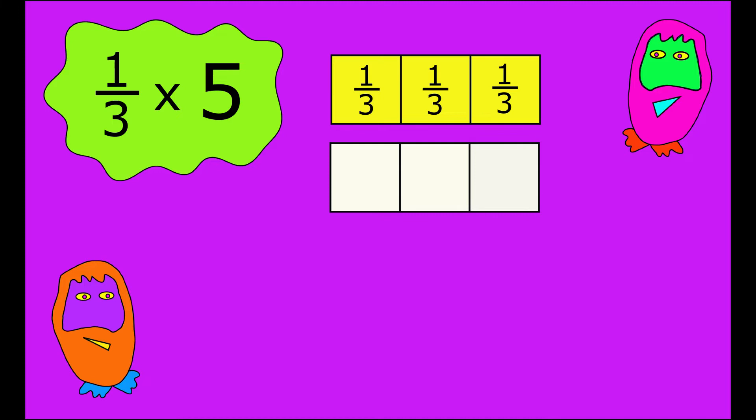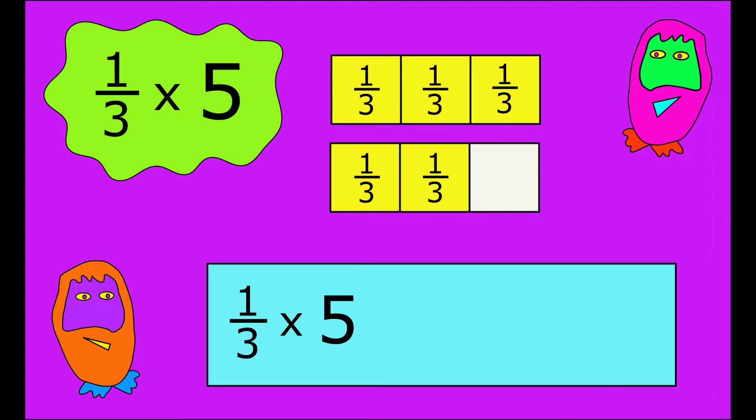You can see from the picture that in total, when you have five lots of a third, that's five-thirds. So one-third multiplied by five is equal to five-thirds, or as a mixed number, one whole and two-thirds.